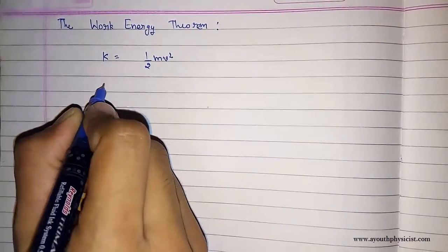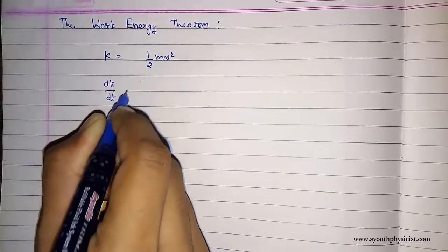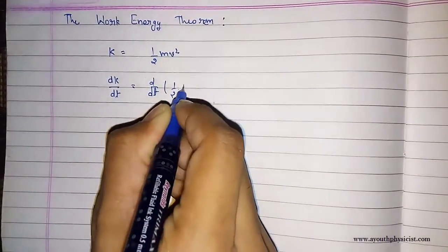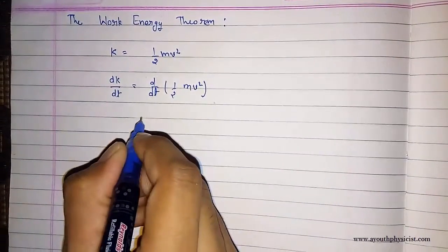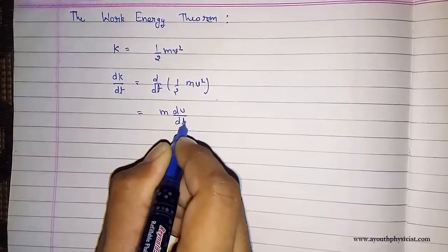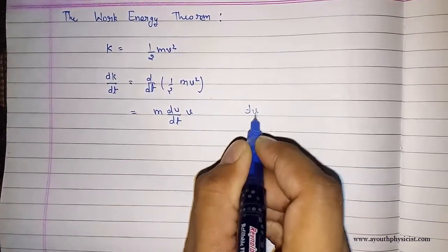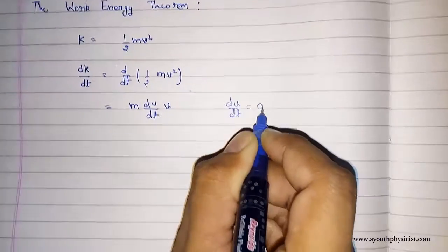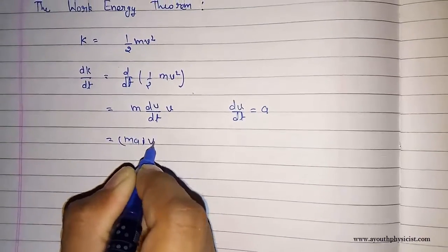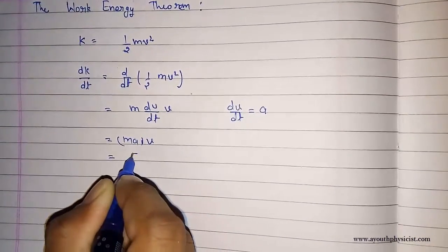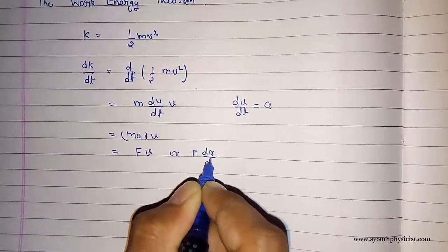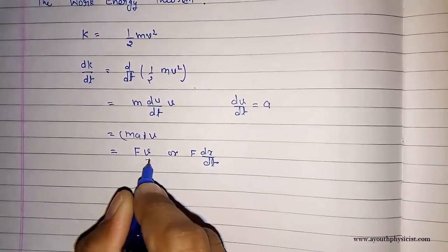The time rate of change of kinetic energy will be: after differentiating we get. We know that dv/dt is a, then ma and v we can write as f·v, or f·dx/dt, where v is velocity.